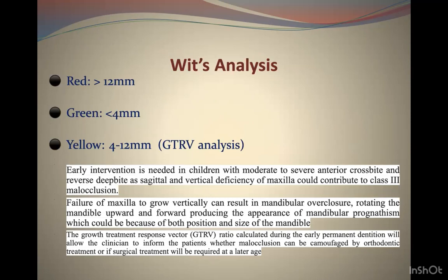The GTRV analysis is a width analysis dividing cases into three groups: green (less than -4mm A-B), where early treatment and camouflage are safe; yellow (-4 to -12mm), where camouflage may or may not work; and red (more than -12mm), where surgical treatment is required regardless and orthopedic treatment should not be attempted.